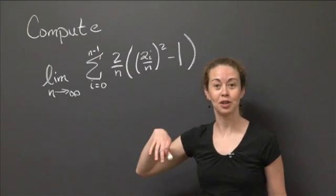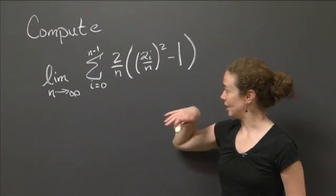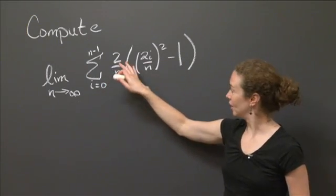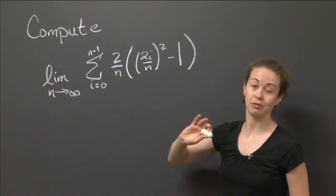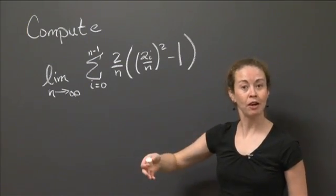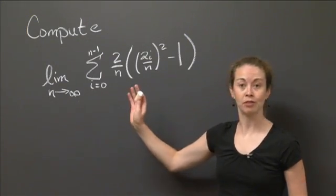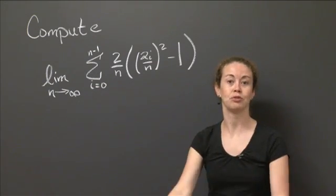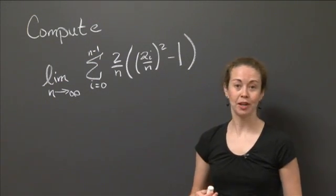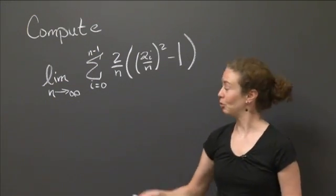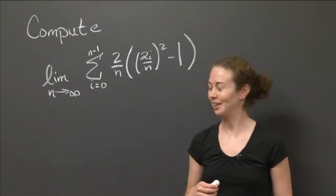Now, this might look a little intimidating to try and take a limit of this, but what I'd like you to do as a hint is that you should think about this as being potentially a Riemann sum of a certain function. So if you can figure out the function and you can figure out the appropriate interval that you're taking a Riemann sum over, as n goes to infinity, you should be able to write this as an integral.